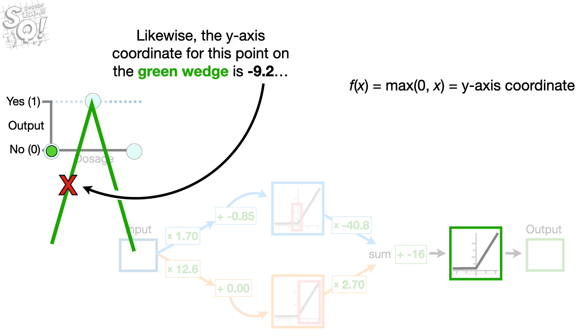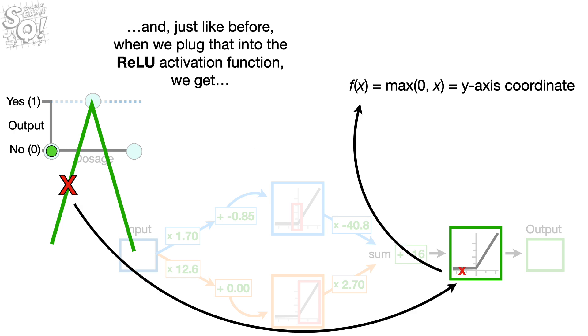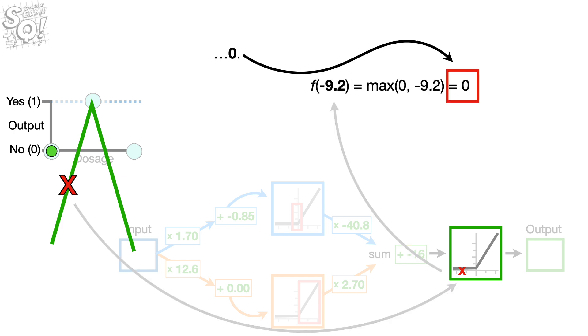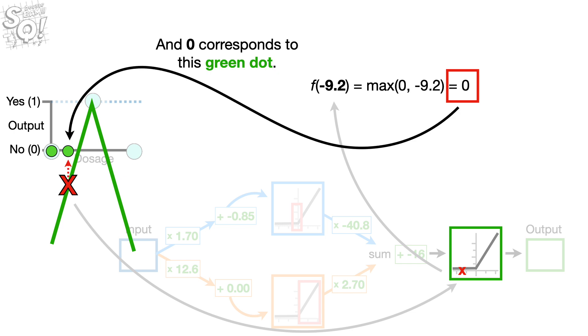Likewise, the y-axis coordinate for this point on the green wedge is negative 9.2. And just like before, when we plug that into the relu activation function, we get 0. And 0 corresponds to this green dot.